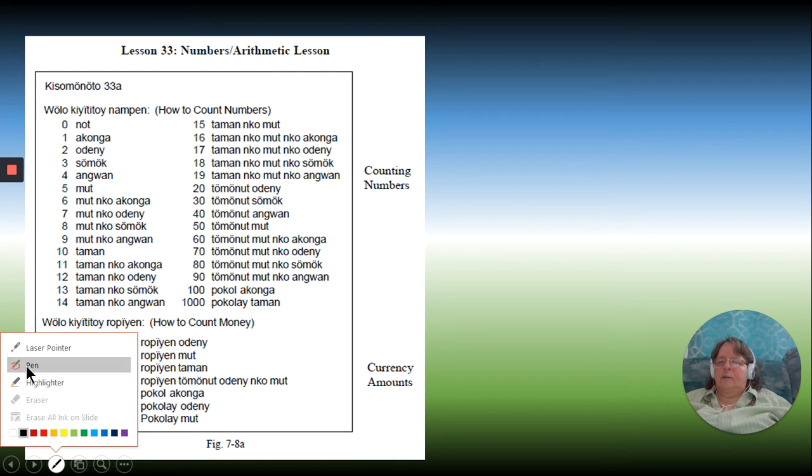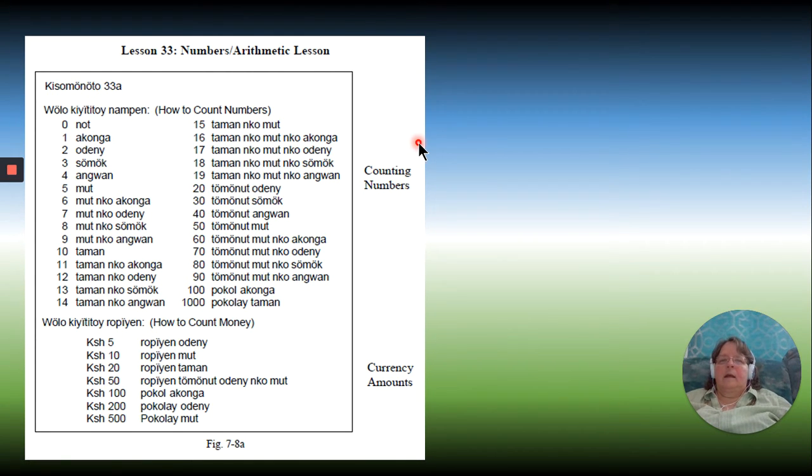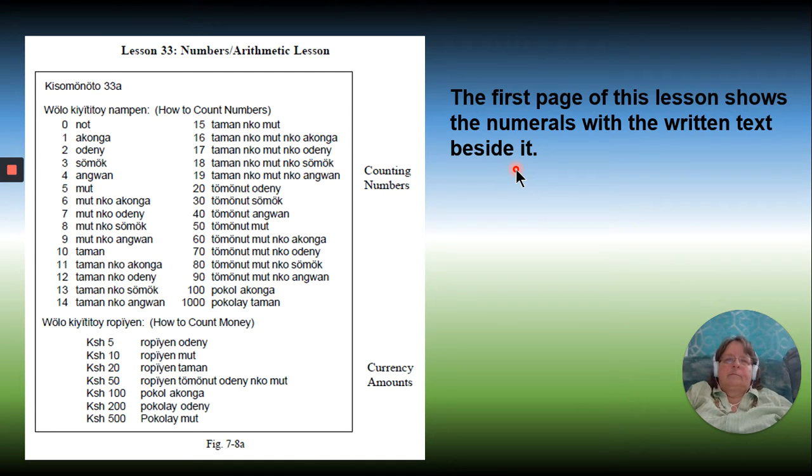The first page of this lesson shows the numbers in numeric order. Usually we do 1 to 10, 1 to 20, and then in the 10s. Depending on the language and what they need, we'll show some of the higher numbers and how they're made.